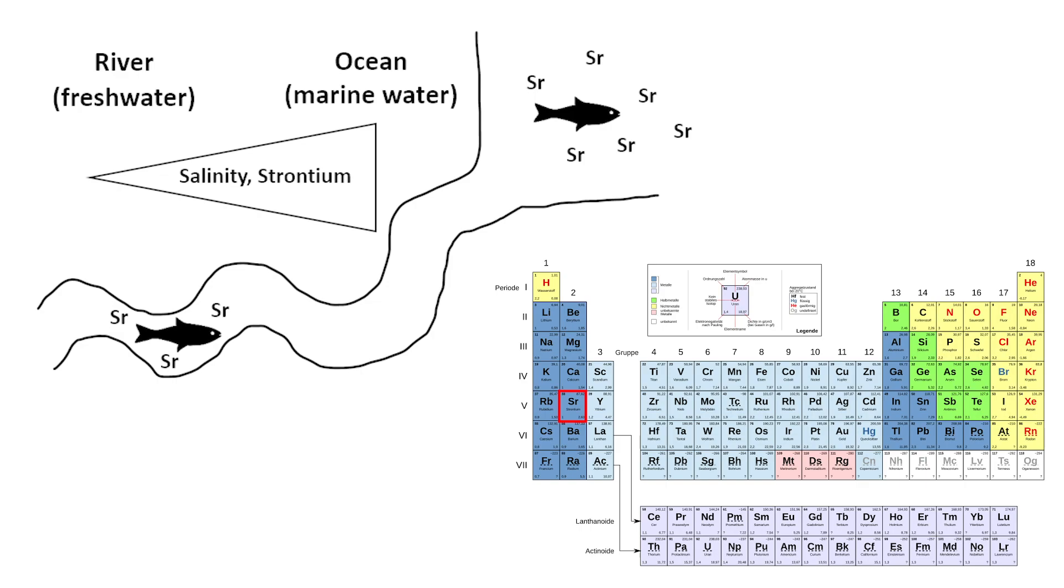Strontium is taken up in direct proportion to the availability in the surrounding water and substitutes calcium in calcified tissues such as scales during the growth of the organism. So specific strontium concentrations in different environments lead to distinct strontium signatures which get recorded in the organism's hard tissue.